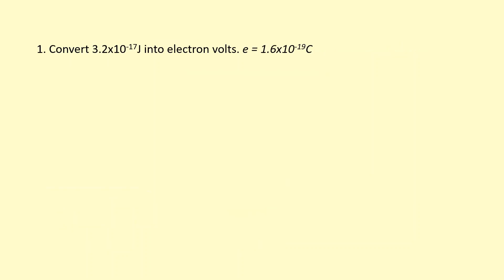To turn this 3.2 times 10^-17 joules into a number that's easier to work with, I'm going to use the charge of an electron, 1.6 times 10^-19 coulombs. If I divide by 1.6 times 10^-19, I get 200. That's a nice easy number and that's what we call electron volts. All you've done is just divided by the charge of an electron, so that's much easier to work with.